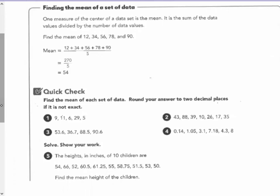And you can see in this example, they've added 12, 34, 56, 78, and 90, divided by 5, and got the average to be 54.